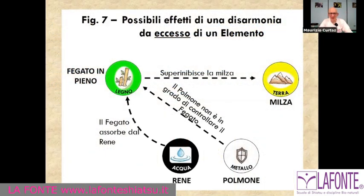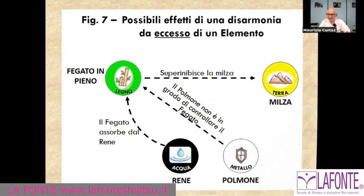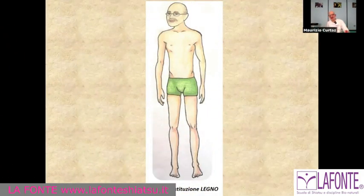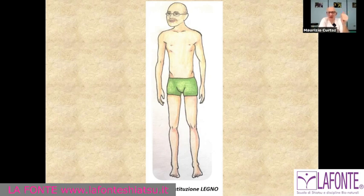During a treatment, if we notice an excess of energy in a meridian, or in the palpation of the abdomen for energetic evaluation — according to Masunaga — we have excess of liver energy, we have a series of possibilities. We also want to give you some categories from the point of view of the five elements: the wood constitutional type, for example, tends to be lean as a physical body.